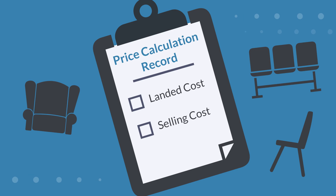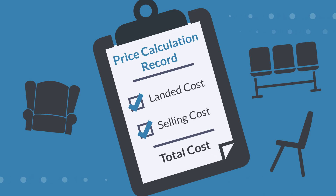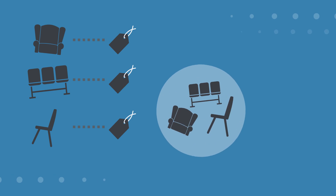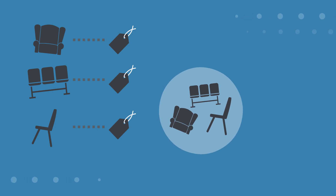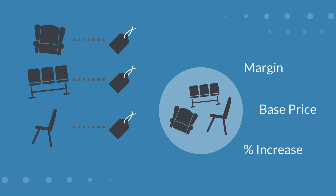After you add in the items, the price calculation record applies the cost variables you set, showing you the total cost. The record then allows you to update each item individually or all items you've selected by setting a desired margin, updating the base price, or doing a percent increase on the price.